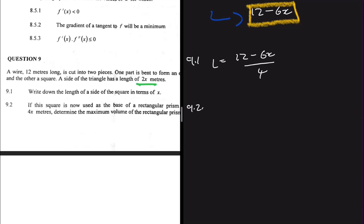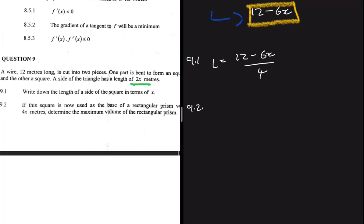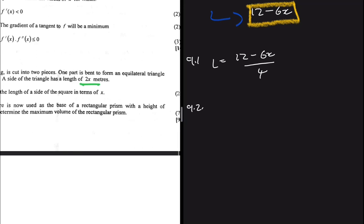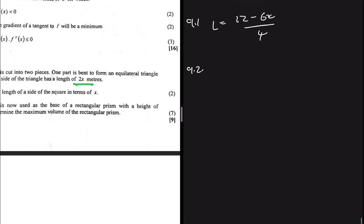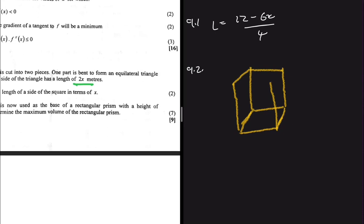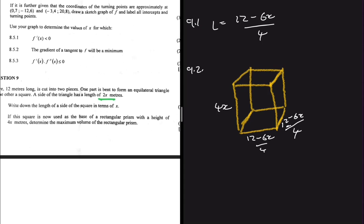Question 9.2 says: if the square is used as the base of a rectangular prism with a height of 4x meters, determine the maximum volume. Let me sketch the rectangular prism first. At the base we have the square with each side equal to (12 − 6x)/4, another square at the top, and the height is 4x.